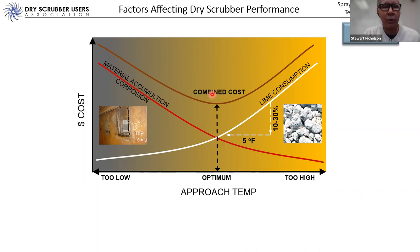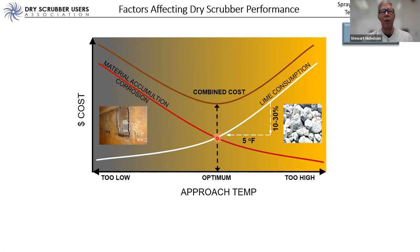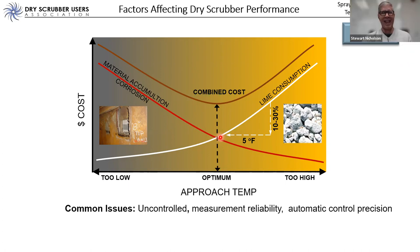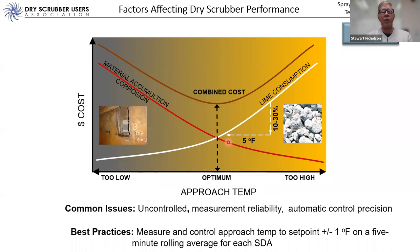That's also where operations and maintenance butt heads — operators and owners push the approach temperature lower to save more money on lime, while maintenance is dealing with the resulting accumulation and corrosion costs. Some common issues: approach temperature was uncontrolled in almost all dry scrubbers built prior to about 2012. About 95 percent of all U.S. dry scrubbers operated before 2012 had no means of measuring or controlling approach temperature.